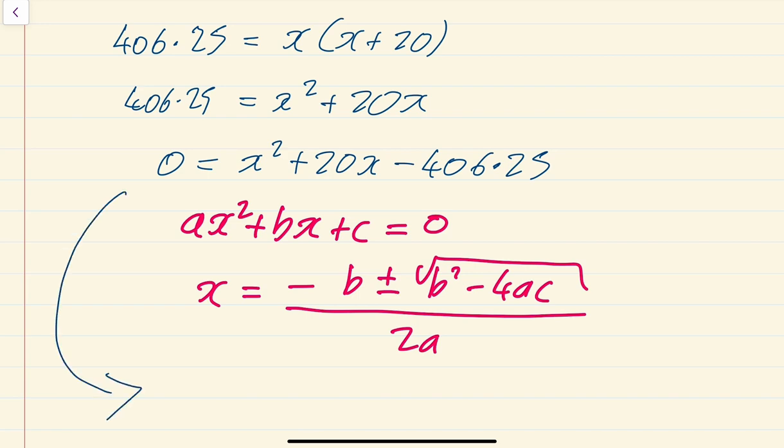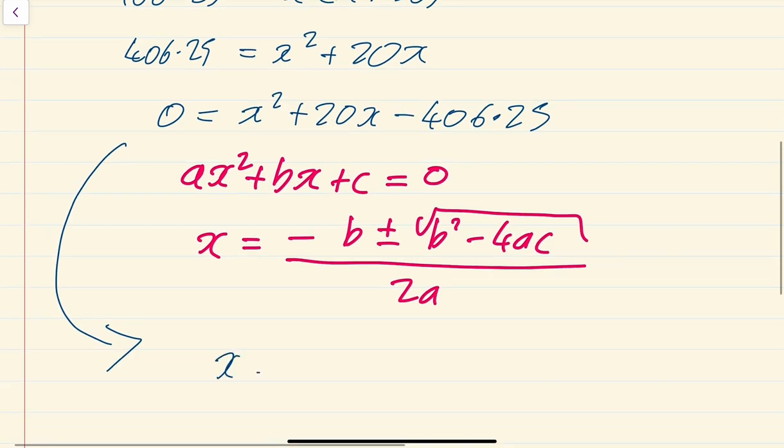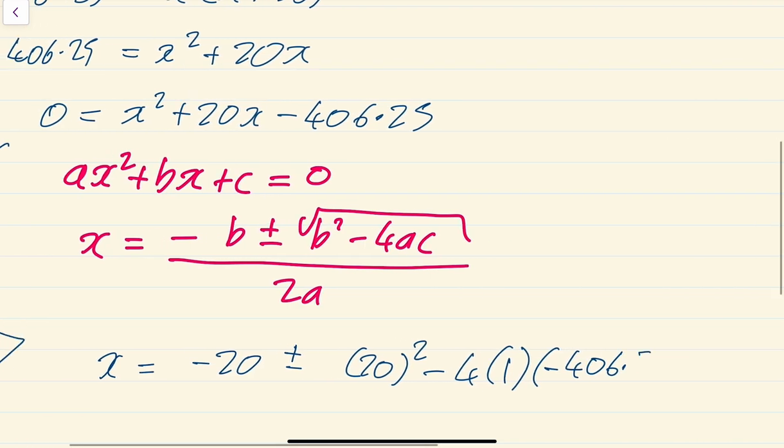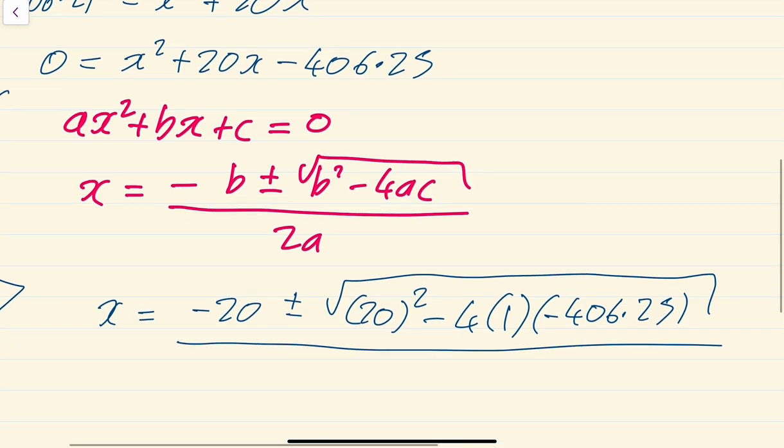From ours, we know then x is going to equal minus 20 plus or minus the square root of 20 squared minus 4 times my a, which is 1, times my c, which is minus 406.25. Square root of that bit, all divided by 2a. a is just 1, so that's just going to be 2.